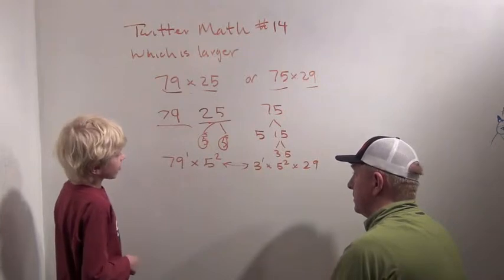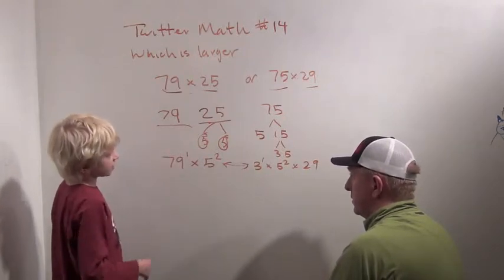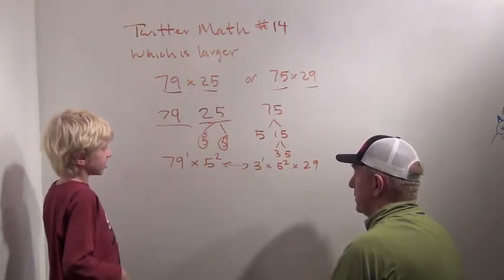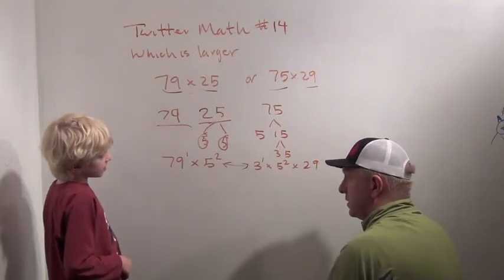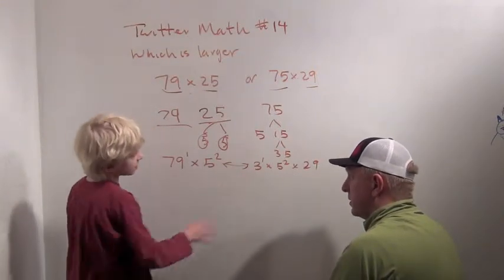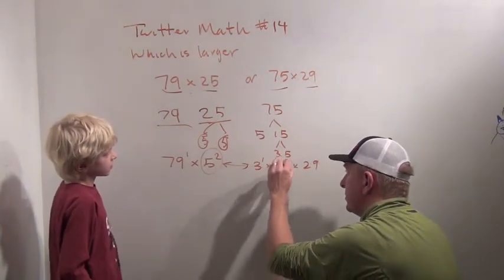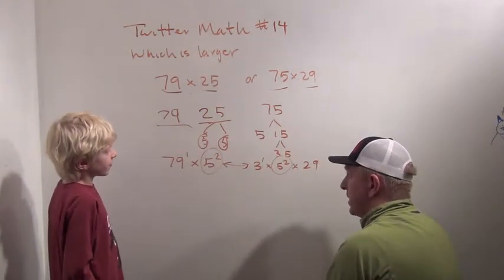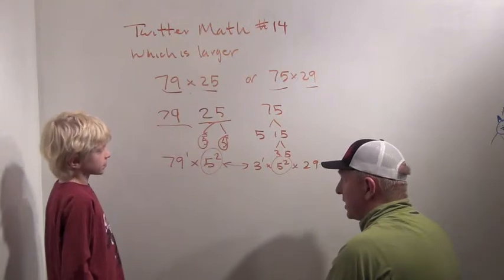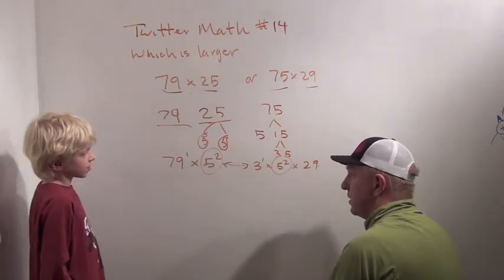But this one has a 79. That has a 29 and a 3. Don't forget. And a 3. So it looks like that's bigger. How would we figure it out though? They both have a 5 squared. I like this approach actually. They both have a 5 squared. So what do we have to check next? Which is larger? What two things do we have to compare?